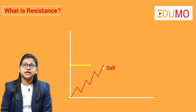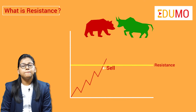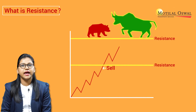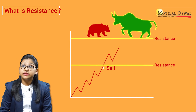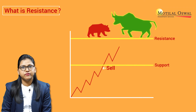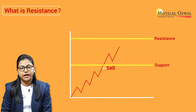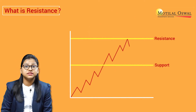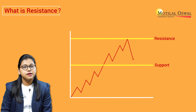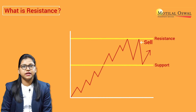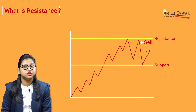Once the resistance level gets broken, bulls take over the bears, a new resistance is formed above it, and now that resistance level becomes a new support level for the prices. If the prices bounce back from the resistance level, the buyer may exit the trade and the seller may take a short position.